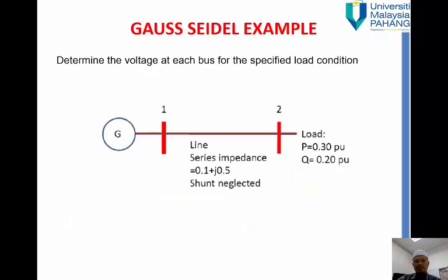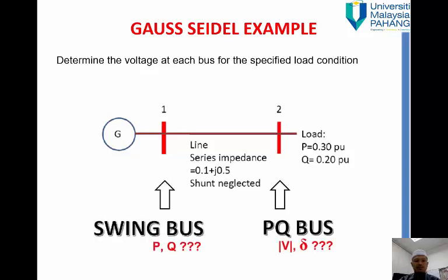So let's take a clear example. The question is to determine the voltage at each bus for the specific load condition where your P is 0.3 per unit, Q 0.2 per unit. So meaning when you put these two values into the equation must be minus 0.3 minus j0.2.